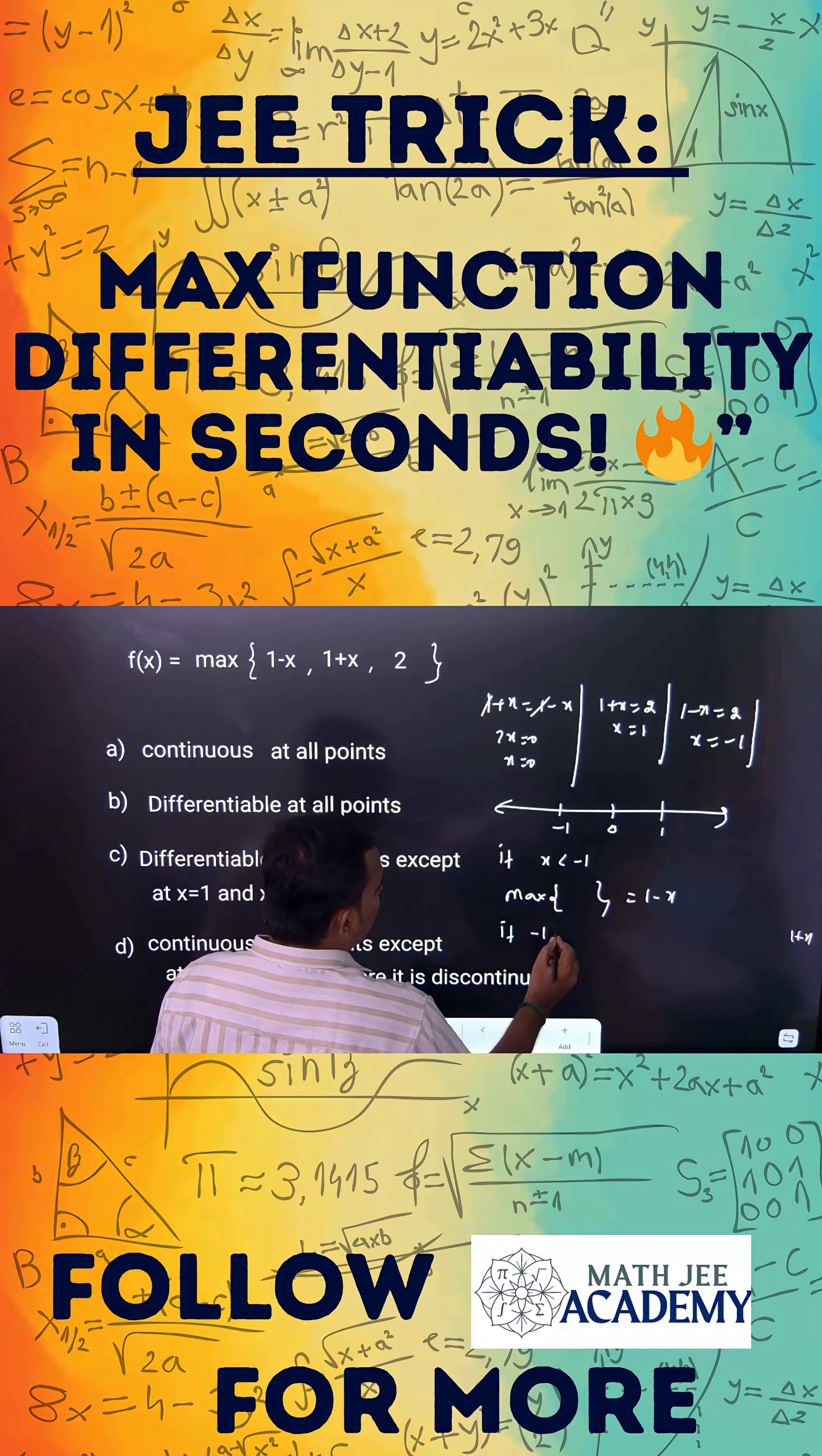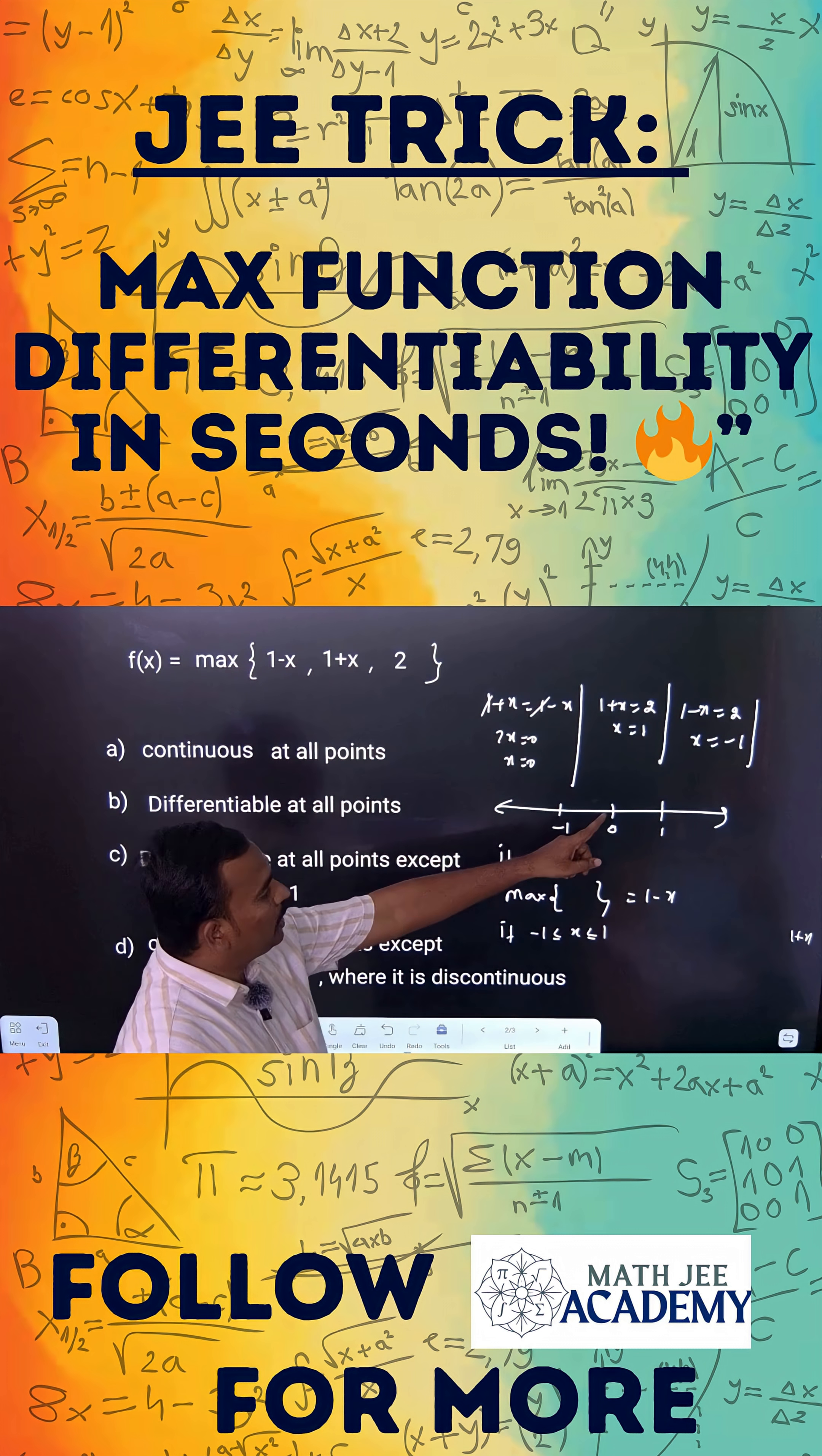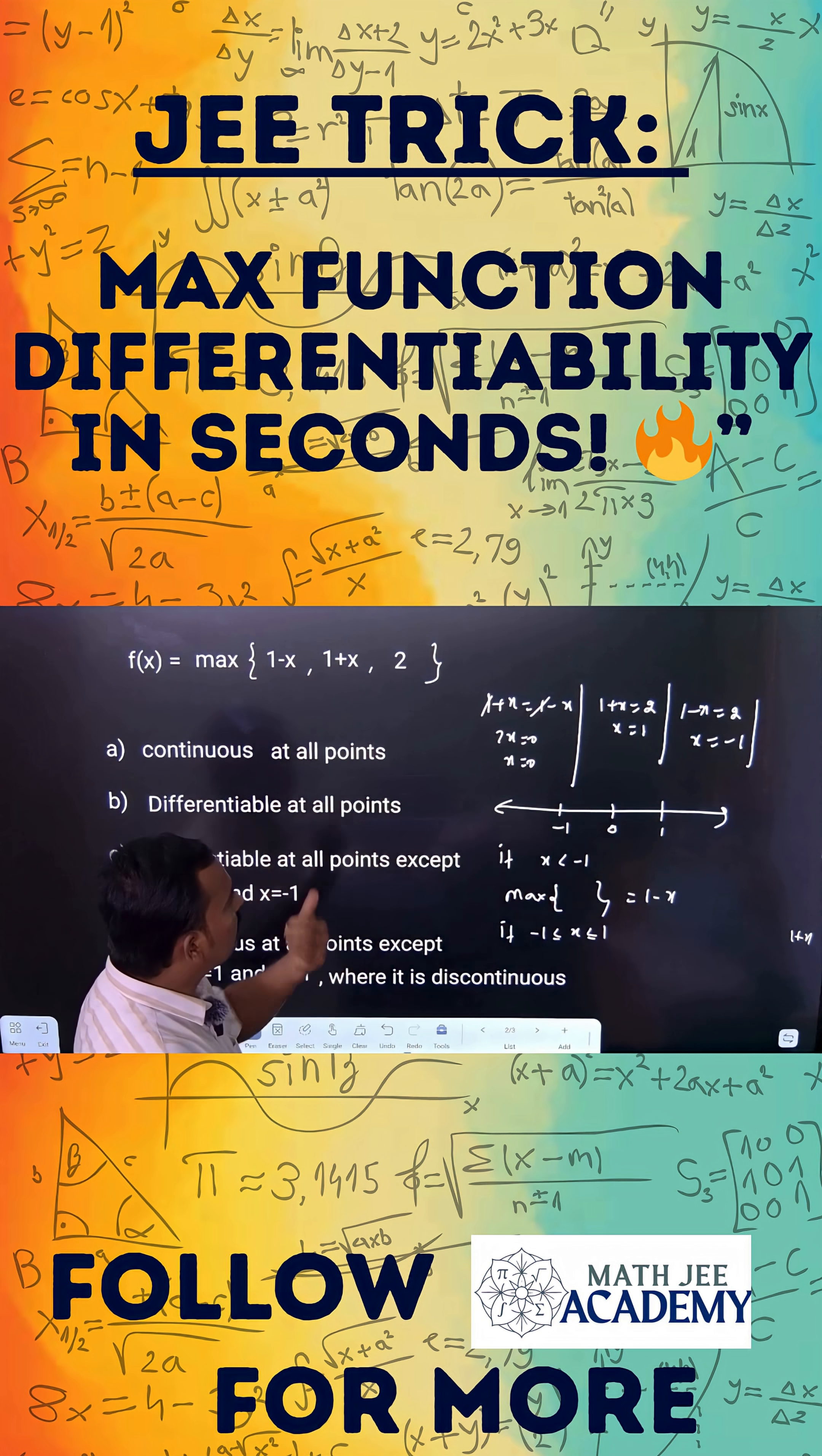If x is minus 1 to 1, you can take. Let us take minus 1 by 2 or plus 1 by 2, any value you can take in this interval. So the maximum will be 2 only.